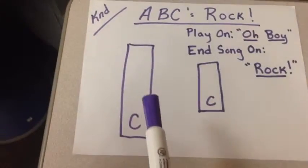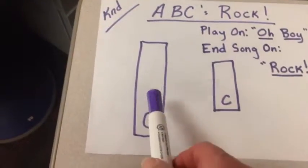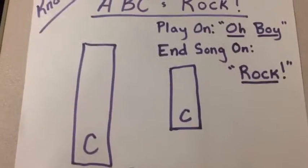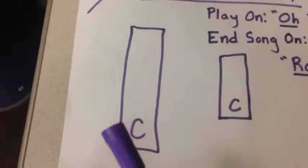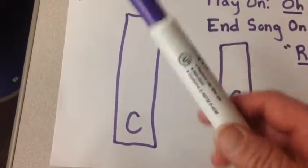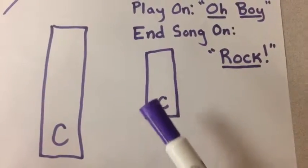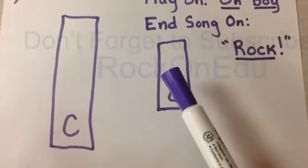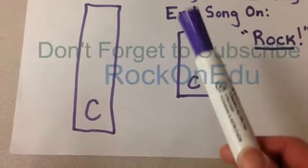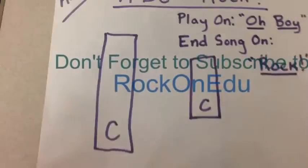Now I'm just going to play the paper and pretend it's a bell. Here we go. Oh boy, oh boy, oh boy. And of course if I have a smaller C, oh boy, oh boy, oh boy. And then rock at the end.